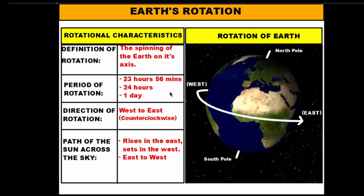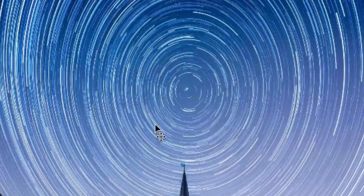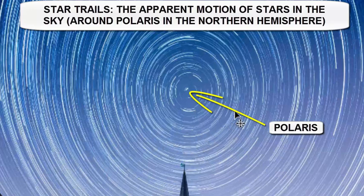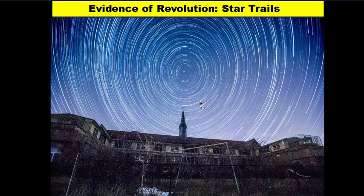Now let's look at the evidence that helps prove the Earth's rotation. The first piece of evidence is star trails — circular trails that stars leave when a camera is overexposed. Throughout the night the stars appear to rotate in the sky above us, but it's not the stars actually moving; it's the Earth moving underneath the sky. Just like if you stood and rotated in place, your ceiling appears to spin above you — the room isn't spinning, you are. That's the same thing: the Earth rotates underneath the sky, giving us those star trail patterns.